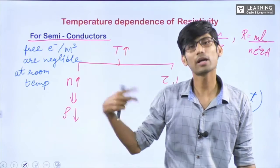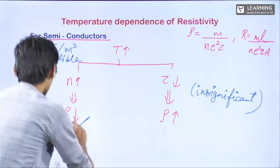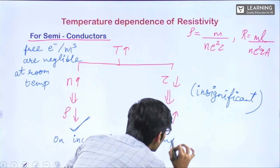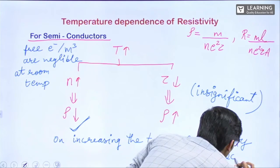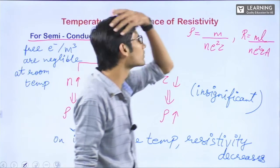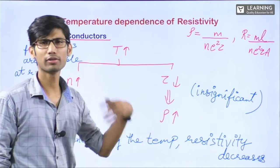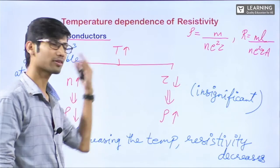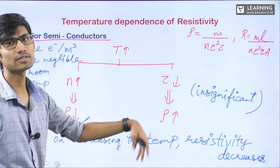This decrease in N-effect will be significant; ρ will decrease. On increasing temperature, resistivity decreases — or equivalently, conductivity increases — for semiconductors. Everything we are studying is first proved experimentally, and then to satisfy our logic, we show this reasoning. By this reasoning also, it is correct — we are satisfied that because of this particular reason resistivity is decreasing. But first it was seen experimentally.